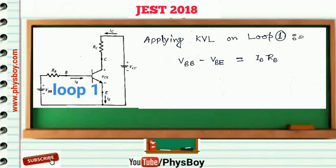From this equation you have to find base resistance RB, where VBB, VBE, and IB is given in this question. So by putting the values of these quantities you will get this equation.